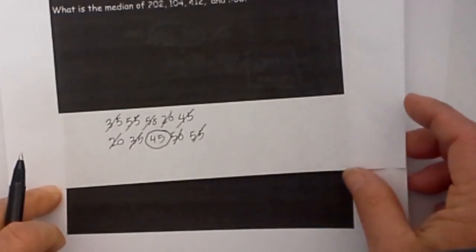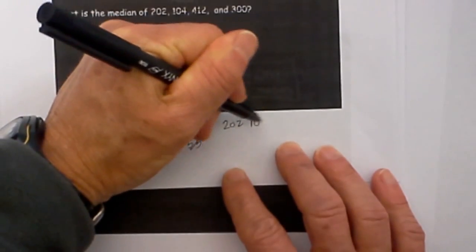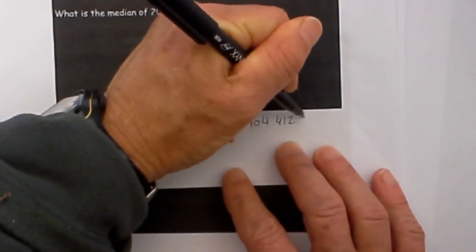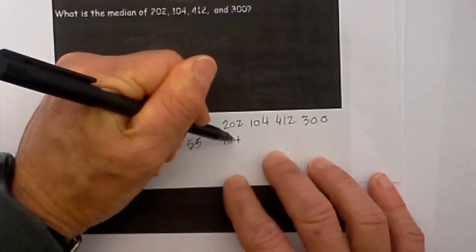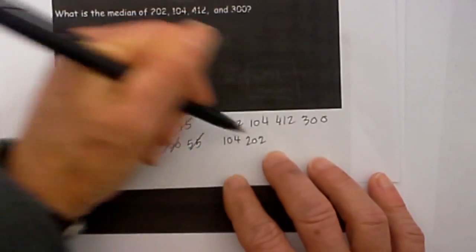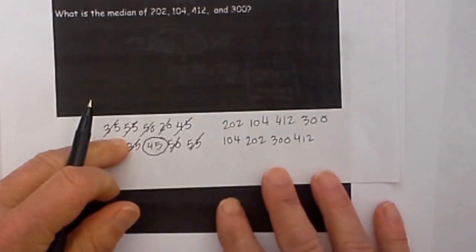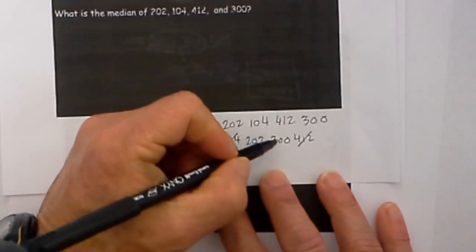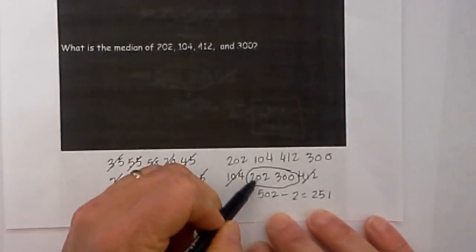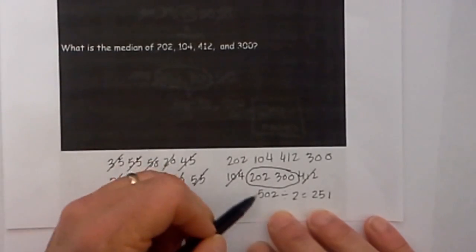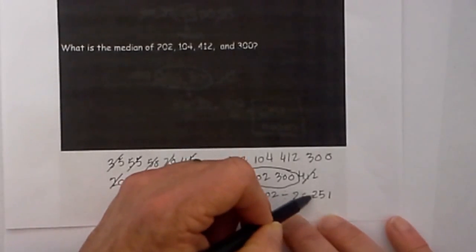Let's do one more quick example. Let's go with the numbers 202, 104, 412, and 300. On this let's first arrange them from least to greatest so we have 104, 202, and 300 and 412. And we cross off the greatest and the least and then we are left with two numbers in the middle. So now we need to take the mean of these two numbers. So when I add 202 and 300 that is 502 divided by 2 equals 251.